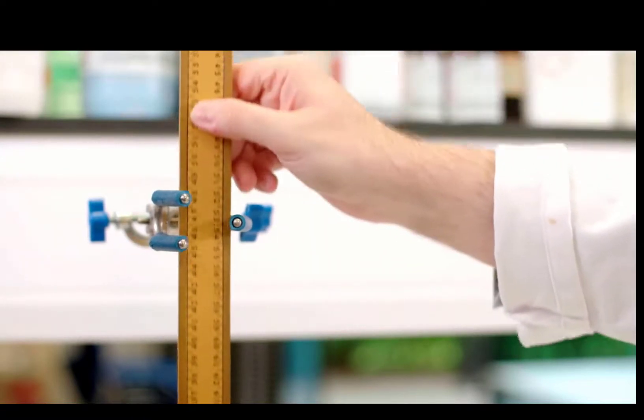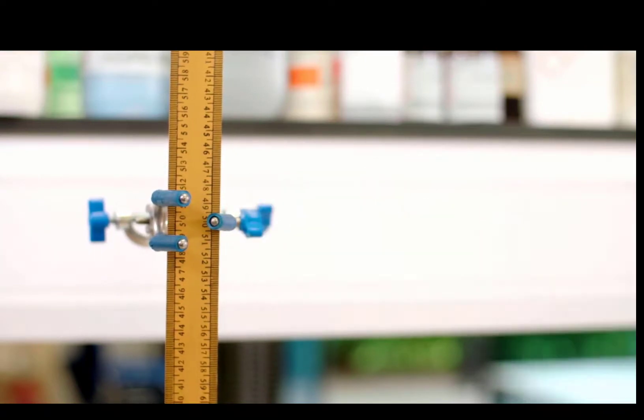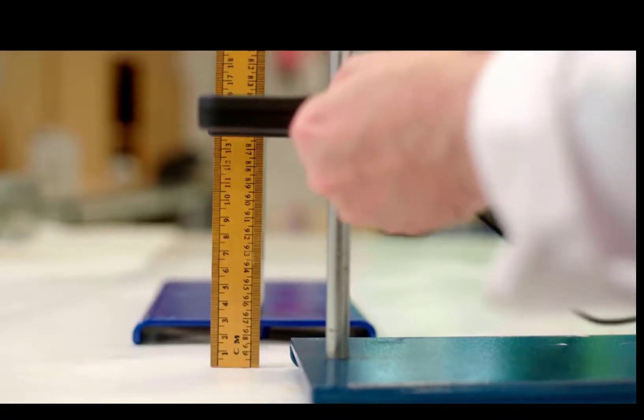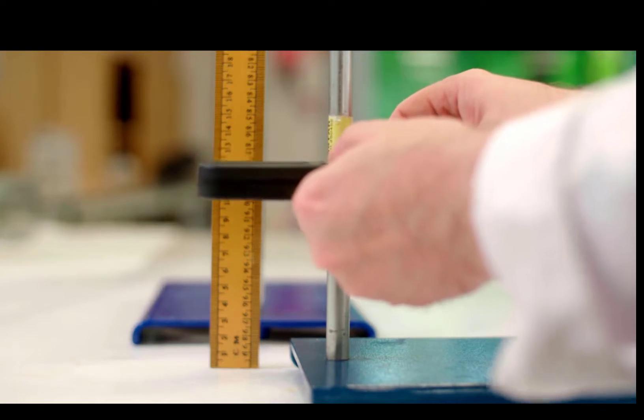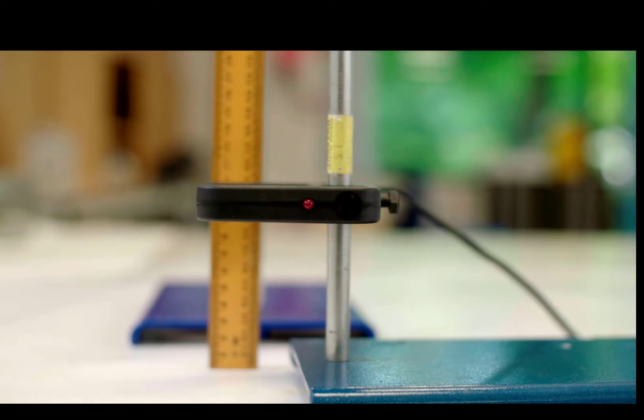The meter rule is attached against one stand, and the light gate is attached to another stand towards the bottom end at 0.1 meters, 10 centimeters above the tabletop. The light gate is set up to measure a width of 0.05 meters, 5 centimeters.